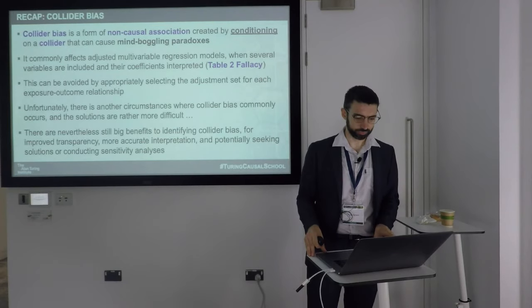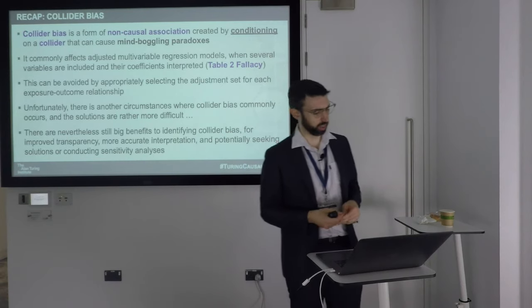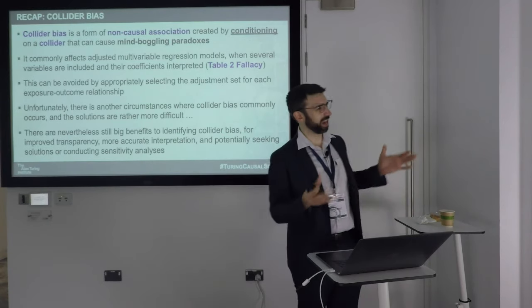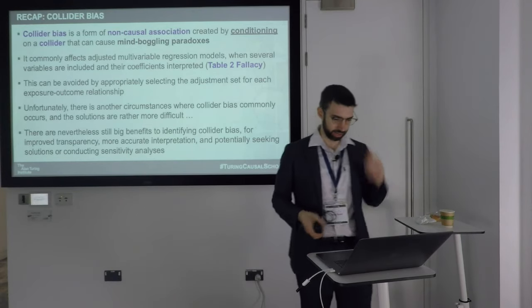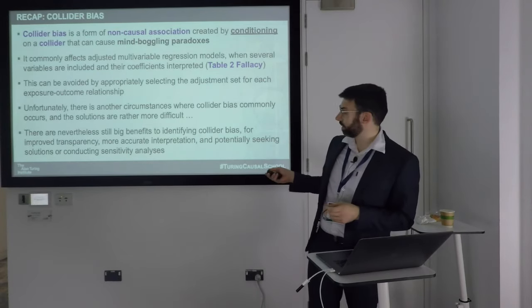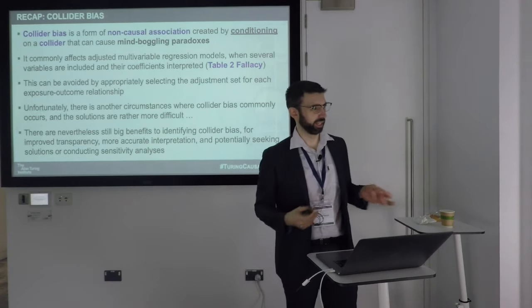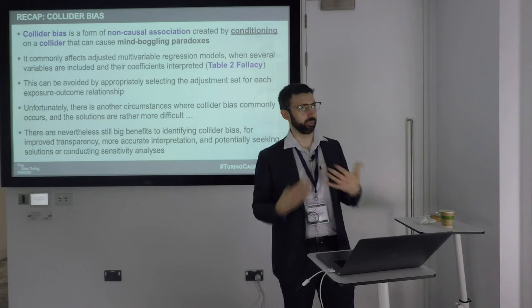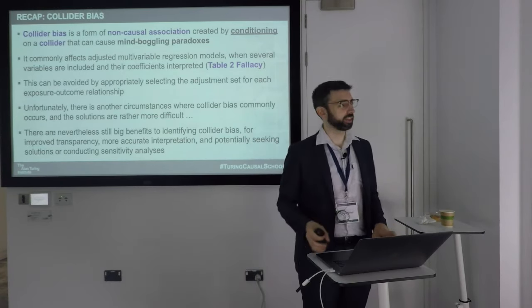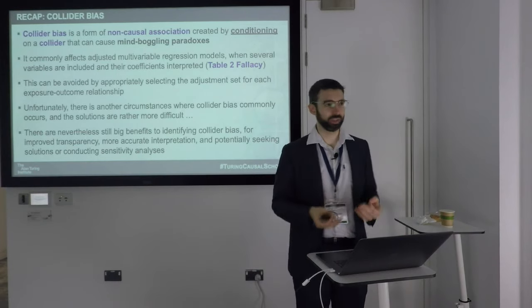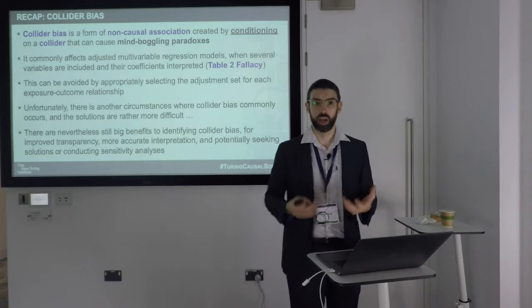We can try to avoid collider bias by choosing the appropriate adjustment set, but there are other situations where it's not as simple as that — we can't just not make a mistake, we have to think about what's going on in our data. Even in situations where collider bias is completely impossible to fix, there is still an enormous benefit to knowing about the type of bias you have in those data and how it may be affecting your research.